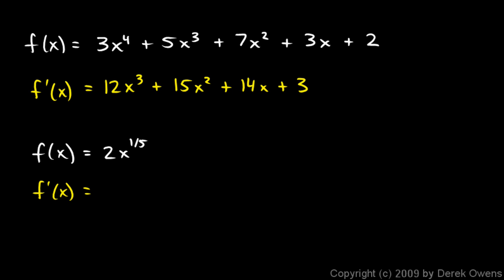But the power rule still works even if we have fractional exponents right here. So to find the derivative of this, f prime of x is going to be 2 times the derivative of x to the 1 fifth. And that's going to be 1 fifth. This power just comes out front as a constant multiplier. And then I have x to the power of this original exponent minus 1. And so 1 fifth minus 1 is negative 4 fifths. So my answer would be 2 fifths x to the power of negative 4 fifths. So it's important to note that the power rule works even if we have fractional exponents.